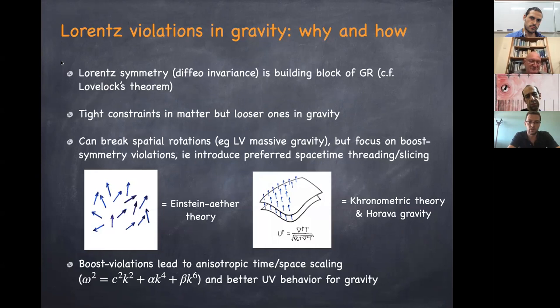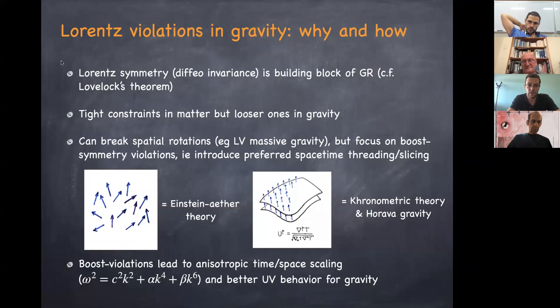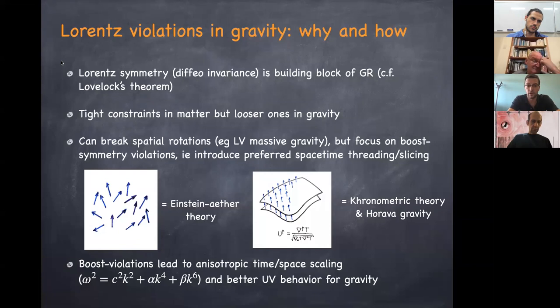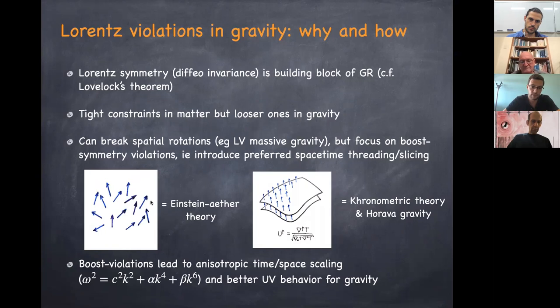In order to put constraints we need to understand the observational consequences of these violations. In this talk I will not break Lorentz symmetry completely, but I will break only boosts — not spatial rotations. I'll focus on violations of boost symmetry, introducing a preferred time in a sense reminiscent of Newton's absolute time. You can do this in two ways: by introducing a preferred threading of spacetime, or a preferred foliation.